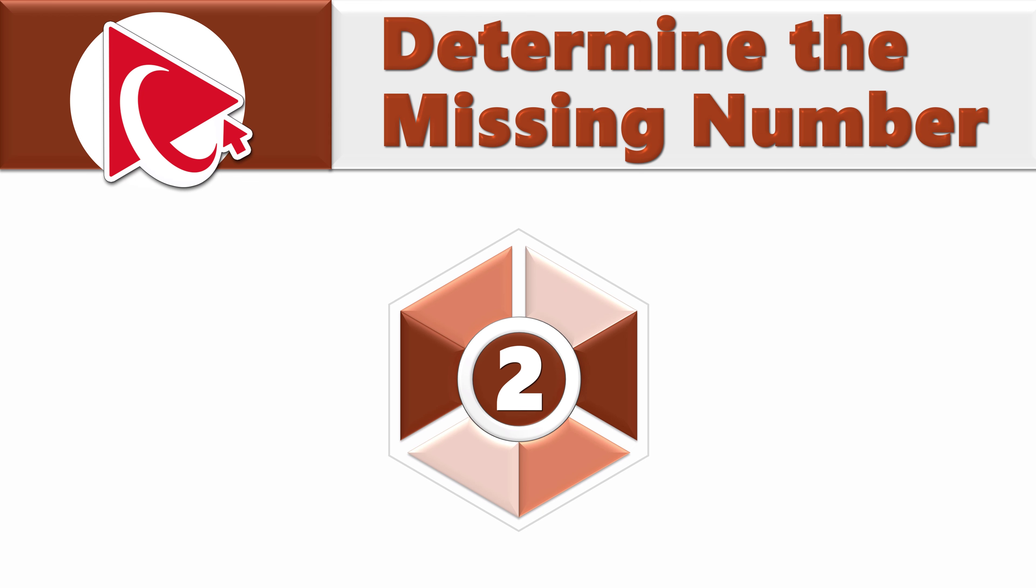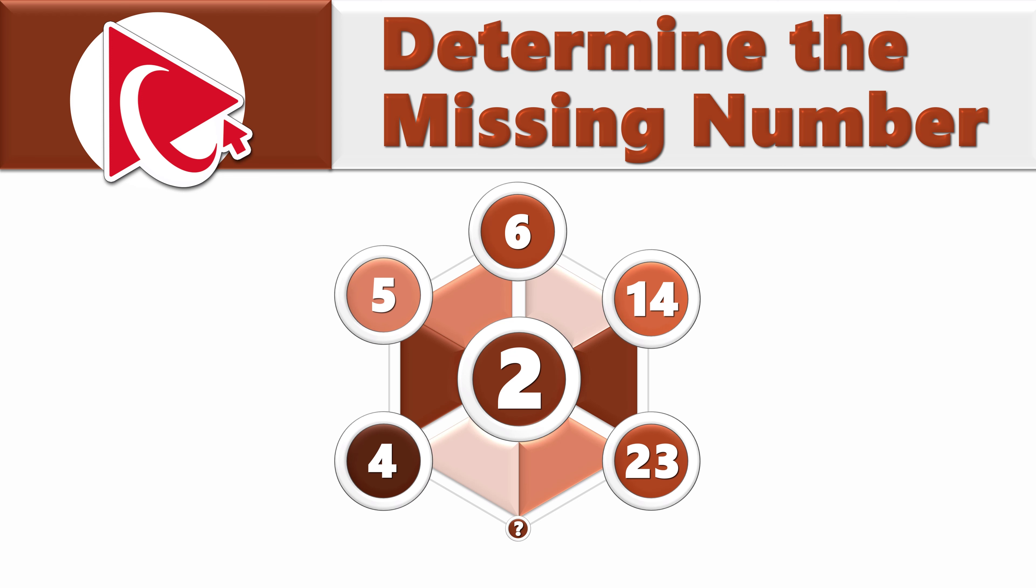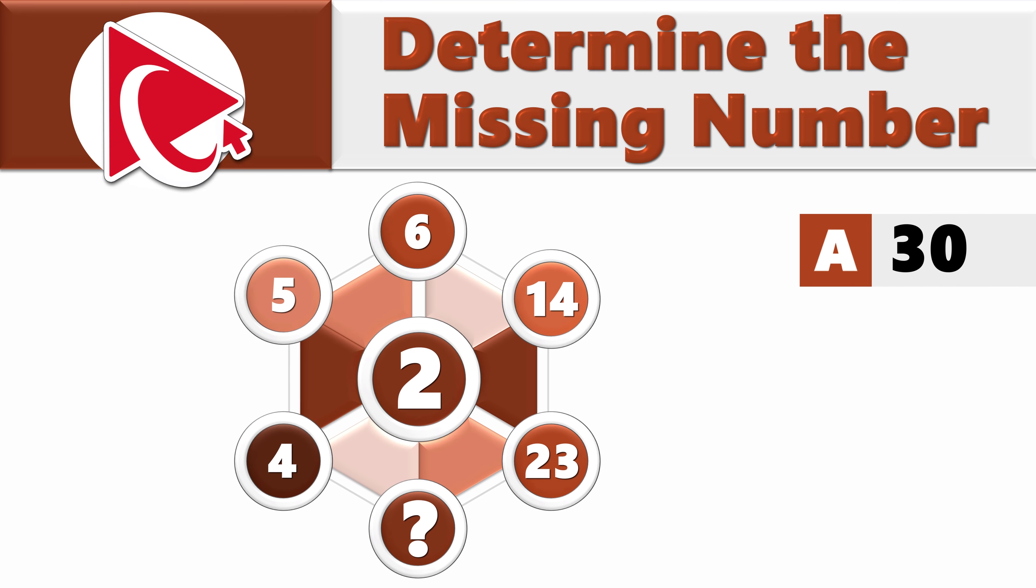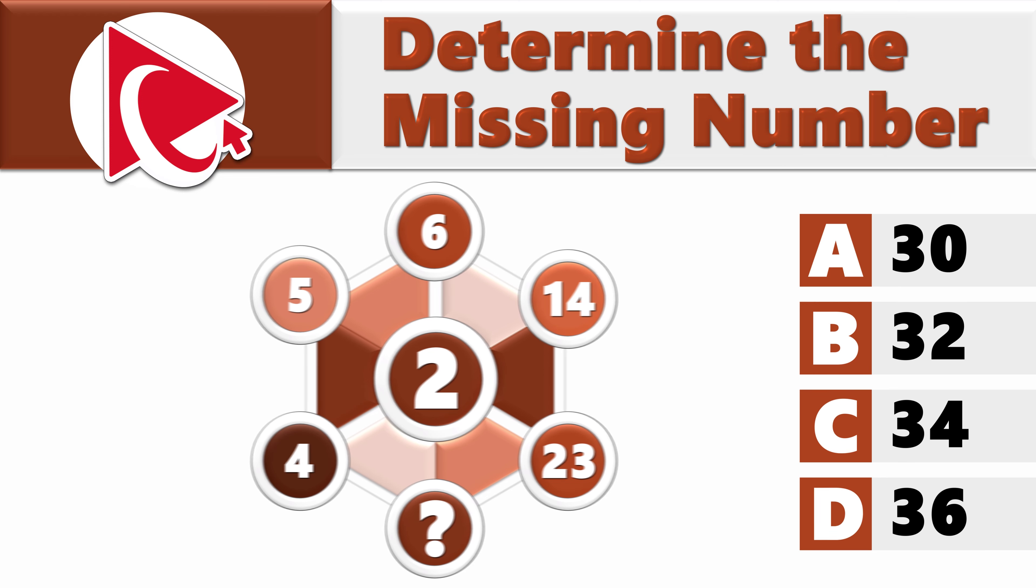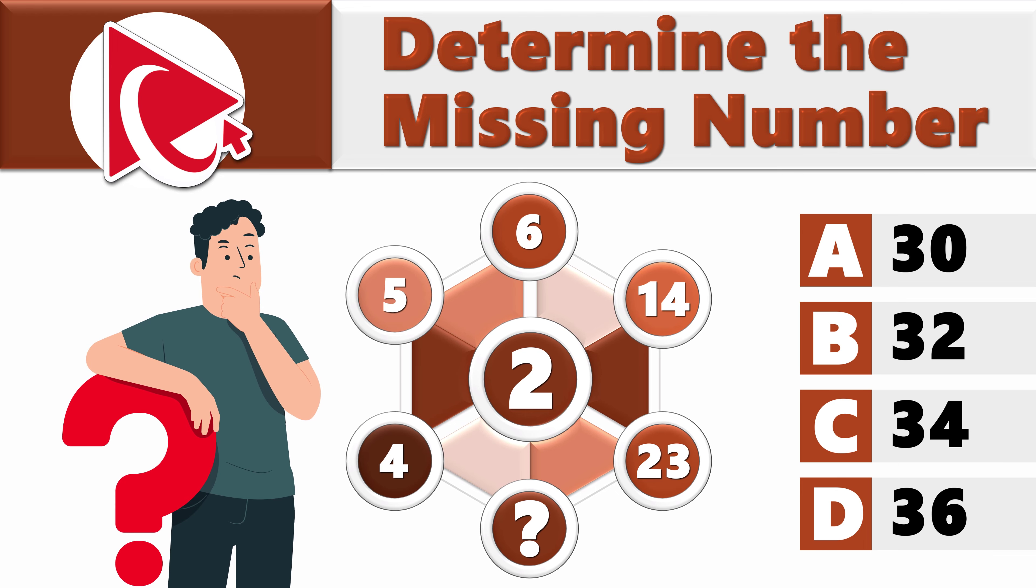You're presented with a hexagon. Hexagon has number 2 in the middle and numbers 4, 5, 6, 14, and 23 followed by the missing number on the outside. You need to calculate and select the missing number out of four possible choices. Choice A: 30, choice B: 32, choice C: 34, and last but not least, choice D: 36.